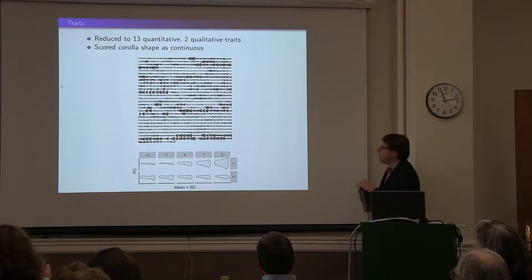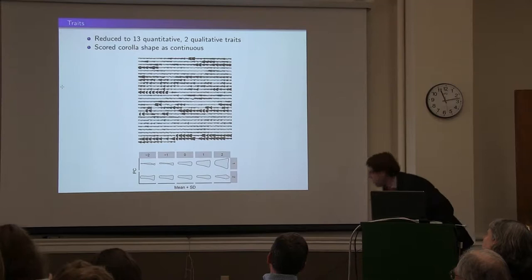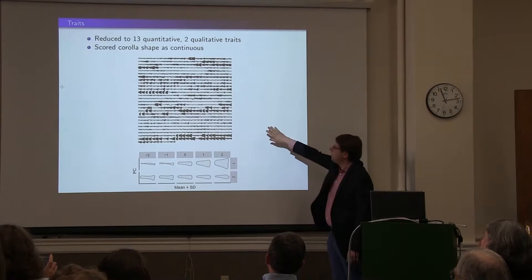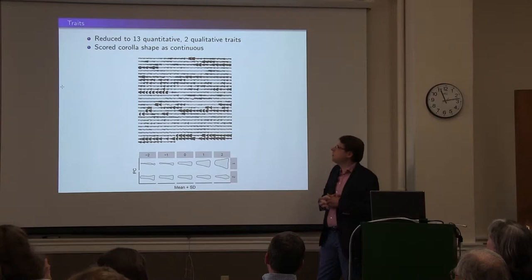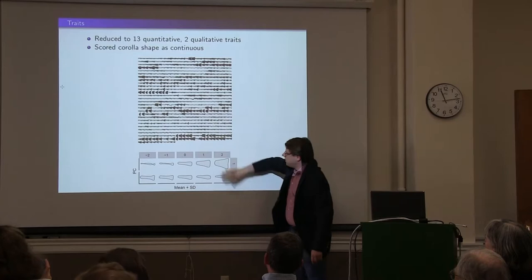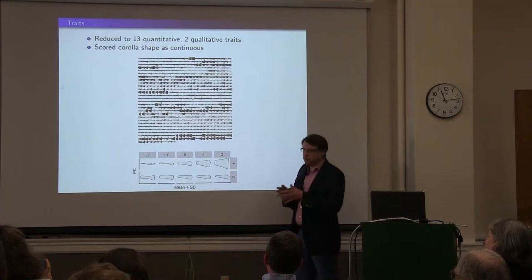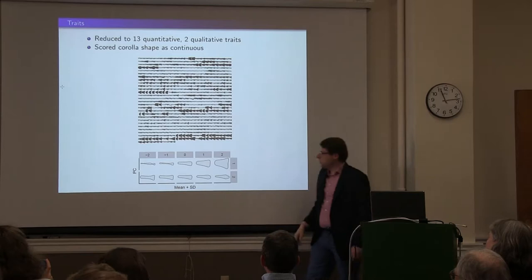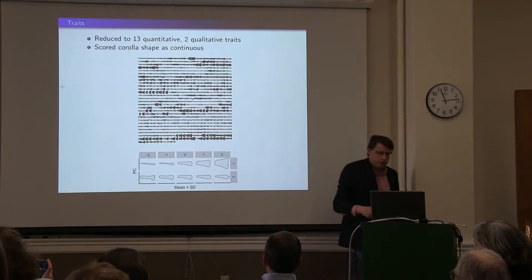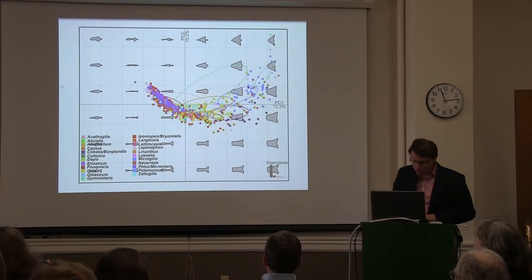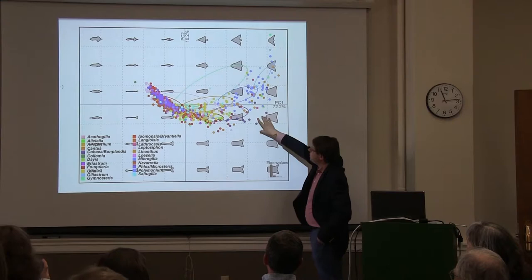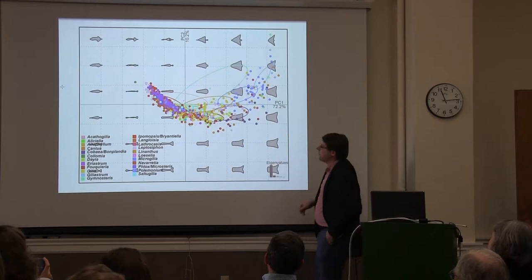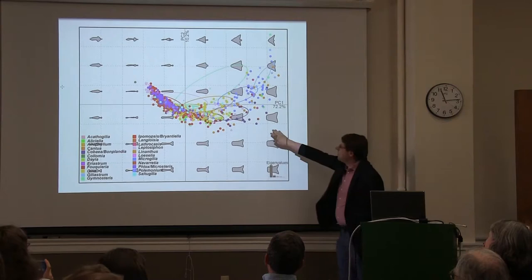We also have our quantitative traits. One thing I'll say before going into them: we scored corolla shape by outlining all the corollas and transforming that into a quantitative variable using Fourier transformations. Essentially, you fit trigonometric functions to the outlines and do a principal components analysis to reduce dimensionality. The first principal component explains tubular to broad corollas — or tubular to campanulate corollas — and that accounts for about 72% of the variation in the data set. You can see the distribution of corolla shapes — a lot of very tubular corollas, not so many broad corollas, but there is some clustering in terms of clades in this morphospace.